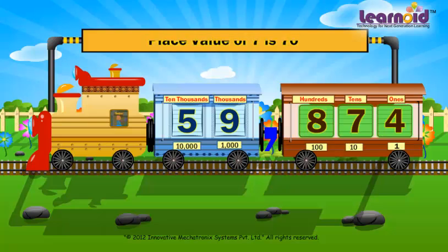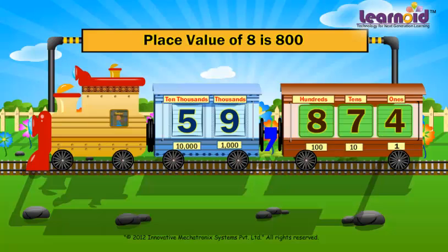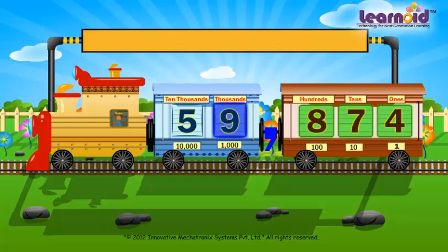Number 8 is in the 100's window. Its place value is 800. Number 9 is in the 1000's window. Its place value is 9000.